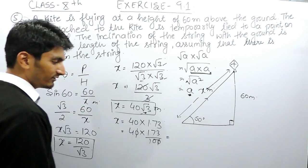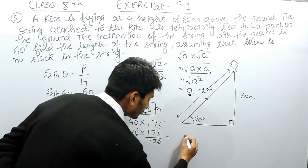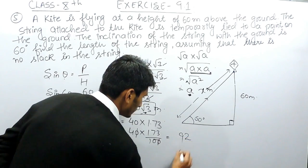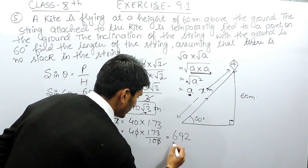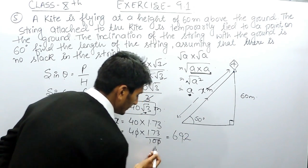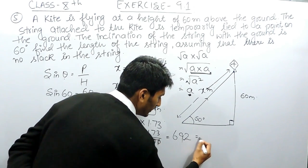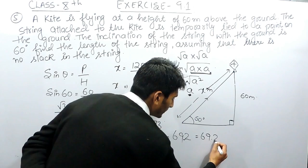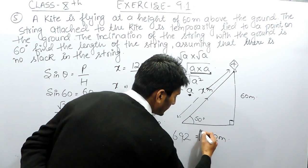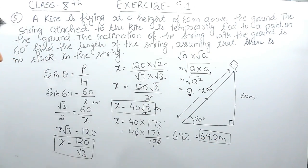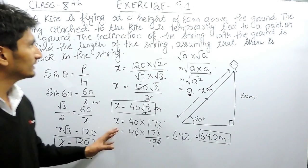Zero can be cancelled with zero. 4 into 3 is 12. There is a zero in the denominator, so I can place one decimal. The value of the length of this string must be equal to 69.2 meters. This is how you can solve this fifth question.